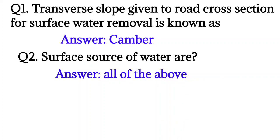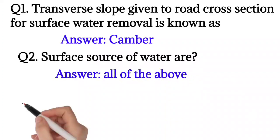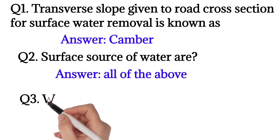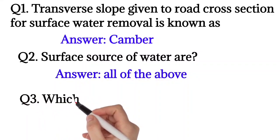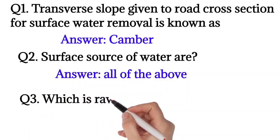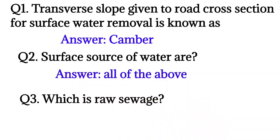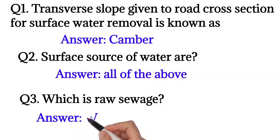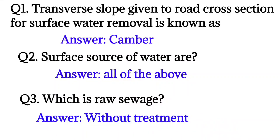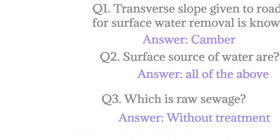Question number two: surface sources of water. The answer is all of the above — canals, lakes, and rivers. Question number three: sewage without treatment is called raw sewage. So the answer is raw sewage.